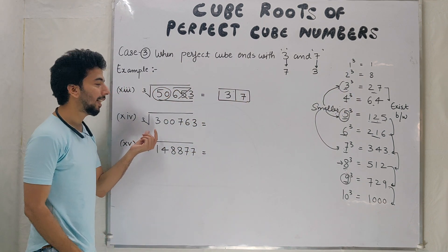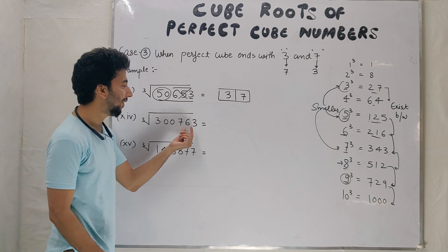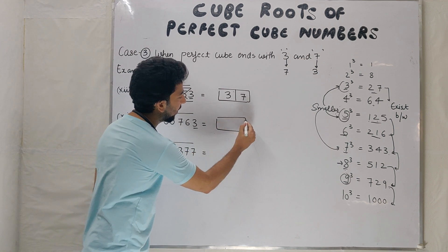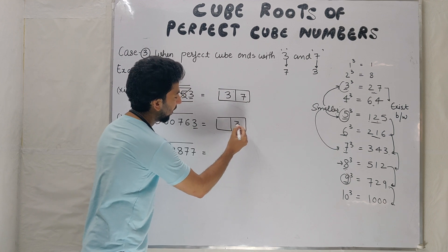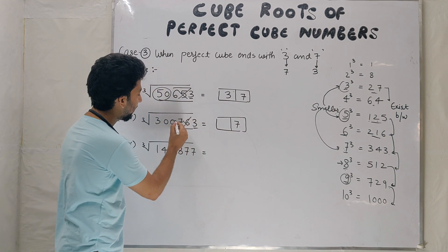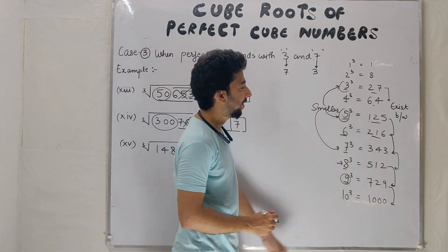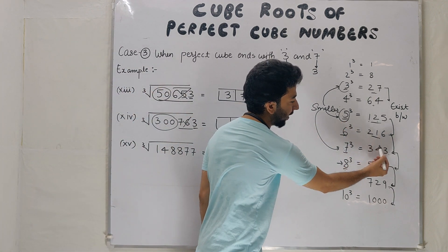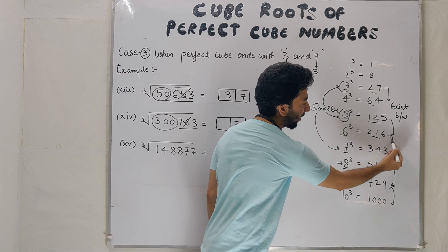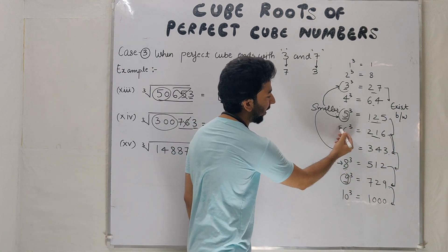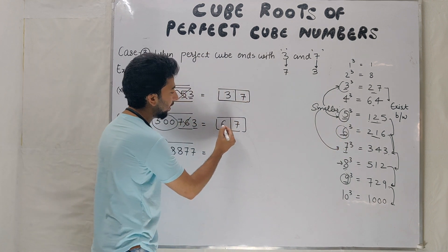Example number 14: 300763. Ends with 3, unit place 7. Cancel 3 digits, 300. Check digits between 216 and 343, which are 6 and 7. Smaller 6, answer 67.